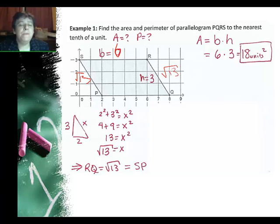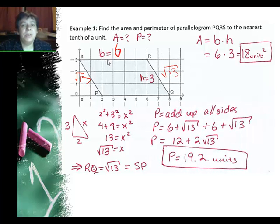This side is going to be square root of 13 so I'll have square root of 13 here, and I'll also have square root of 13 on this side. When I'm looking for my perimeter I just need to add up all the sides. So I have the two sixes on top and bottom plus the two square roots of 13. Two sixes is 12 plus two square root of 13. And after using the calculator I get 19.2 units.